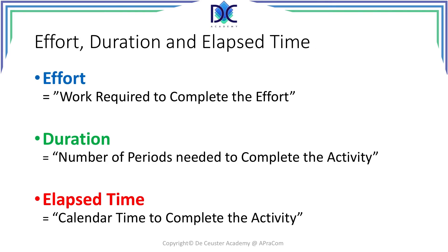Let's have a look at effort, duration, and elapsed time. The effort is the work required to complete the activity by one person. Duration is the number of periods needed to complete the activity — when we add more people or people with higher or lower skills, we have to adjust the effort into a duration estimate. Finally, elapsed time is the calendar time needed to complete the activity.